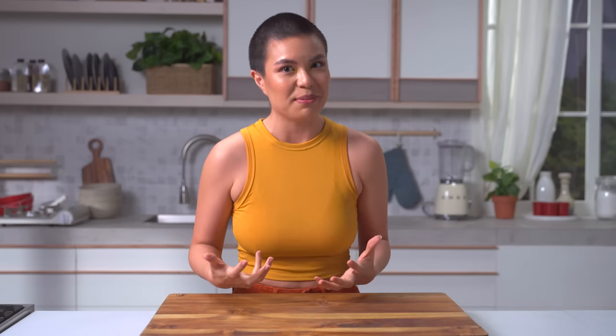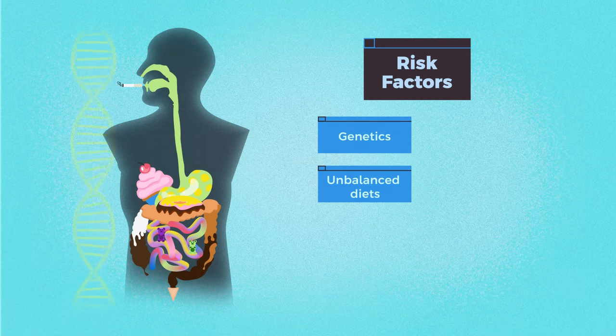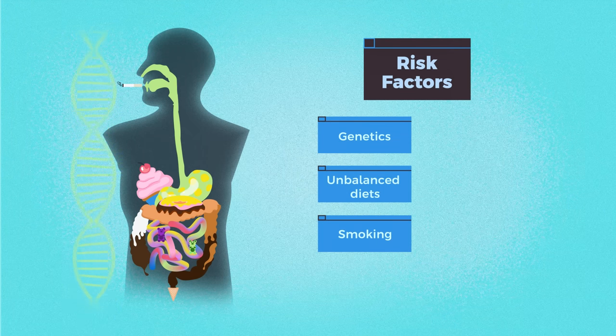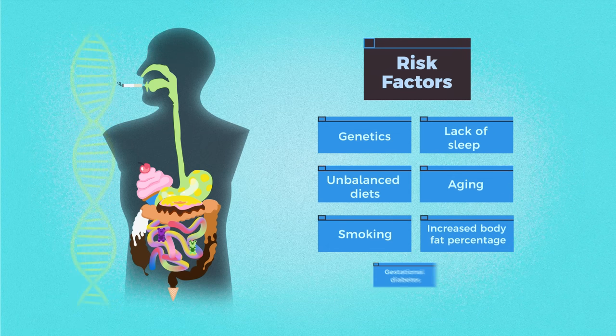What are the risk factors for diabetes — meaning what are the things that might increase my chances of having it? Number one, genetics. Then lifestyle factors: an unbalanced diet, lack of exercise, constant overeating — these will also increase your risk for diabetes. Smoking and other vices like drinking alcohol, lack of sleep, aging, an increased body fat percentage, gestational diabetes, and also non-alcoholic fatty liver disease.